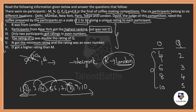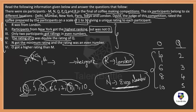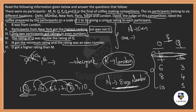N got the minimum rating and it is an even number. Only two participants got even numbers total. If Q=2 and O=4, both are even — combined with N being even, that makes three participants with even rankings, which contradicts the constraint. So Q=2, O=4 is eliminated.